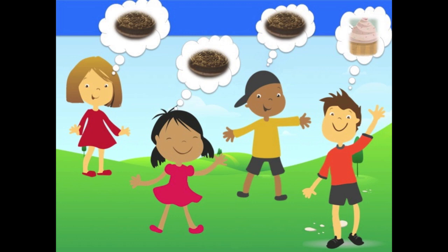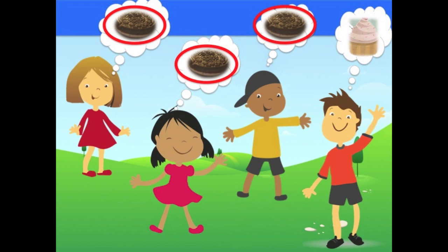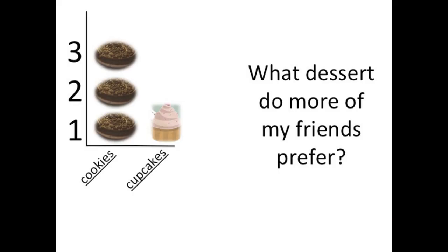Now let's organize this new data. I polled all of my friends to see what kind of dessert they like best. I like cookies the best. Athena and Xavier also really like cookies, and Elliot's favorite dessert is cupcakes. So first let's count the data: one, two, three people like cookies the most, and one person likes cupcakes the most. I organized my data so that I could tell that three people like cookies and one person likes cupcakes.